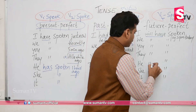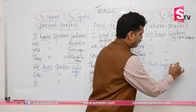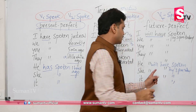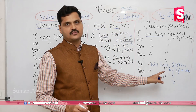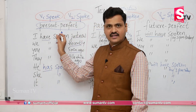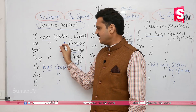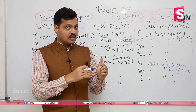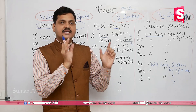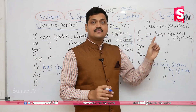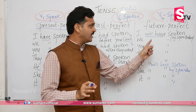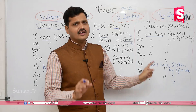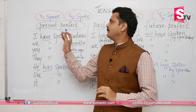Remember: in present perfect, he/she/it use 'has V3,' but in future perfect, when 'will' comes, even he/she/it use 'have' — 'has' is not used. Example: 'He will have spoken by 3pm today.' So for future perfect, the pattern is: will have V3 for all subjects. Now let's recap all three: present perfect — recent completed actions; I/we/you/they have V3, he/she/it has V3. Past perfect — two completed past actions, had V3. Future perfect — will have V3.